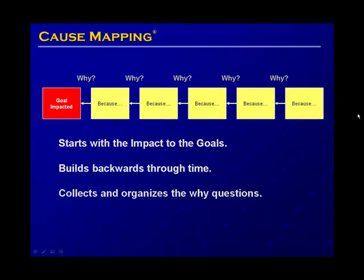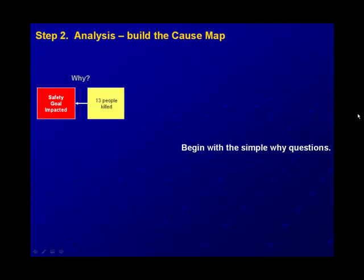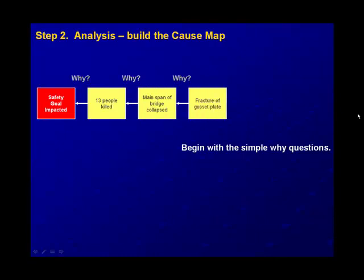So even something as complex as this bridge collapse can still begin with this idea of the safety goal being impacted because 13 people were killed. One of the impacts to the safety goal was the fatalities, obviously the most serious, which were caused by the bridge collapse, which is caused by the fracture of the gusset plates. There's a lot of work that has to go into explaining that simple cause and effect relationship between bridge collapse and gusset plate. It looks simple here, but it's only one cause and effect relationship. There's a lot of detail that goes into this, and that's what the investigation is for.